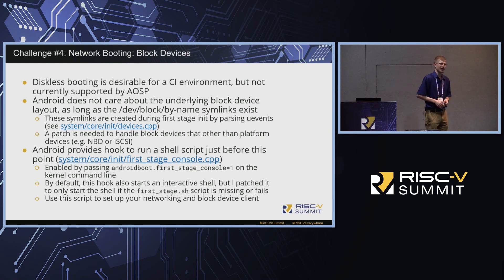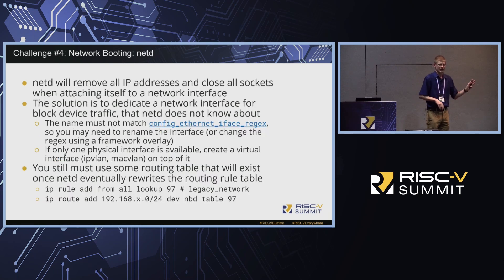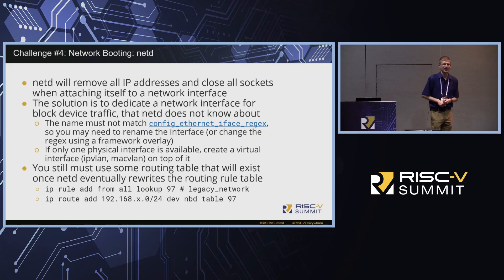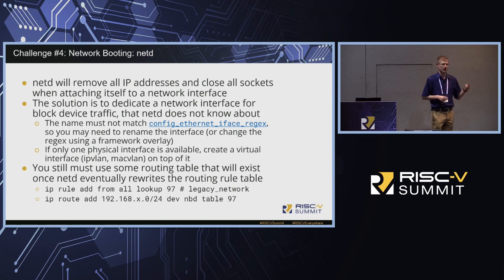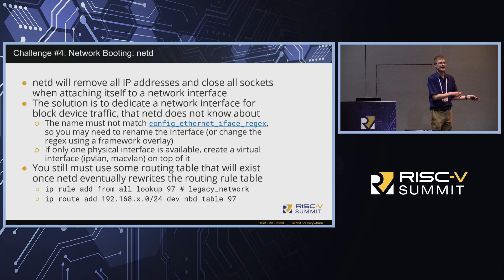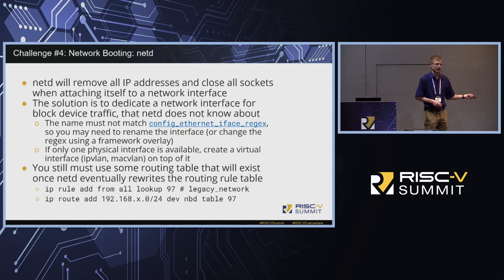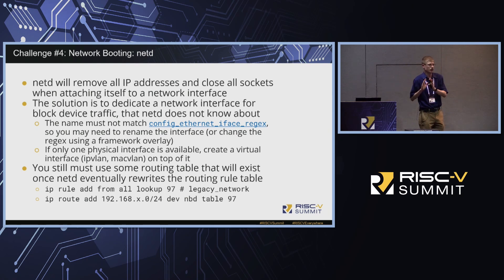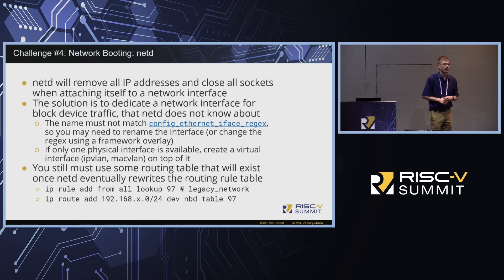This works great as long as the block devices are there. Everything in Android uses them without problems — until NETD starts and rewrites all your networking configuration, disconnecting you from your block device, because it takes over network interfaces: it closes all sockets, deletes all IP addresses, and reconfigures everything. The easy solution is to use a dedicated network interface for block device traffic — either a second Ethernet card or a virtual interface on top of your Ethernet connection — so NETD doesn't know about that interface and won't touch it.